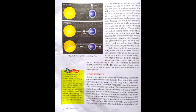But when the moon is in its first and last quarter, the ocean waters get drawn in diagonally opposite directions by the gravitational pull of sun and moon resulting in low tides. These tides are called neap tides.